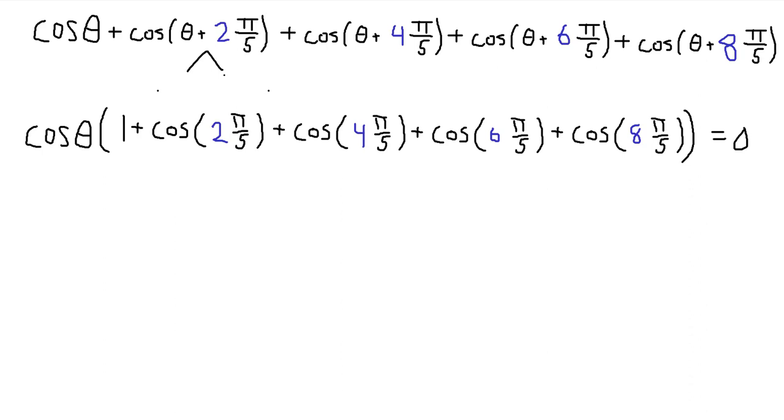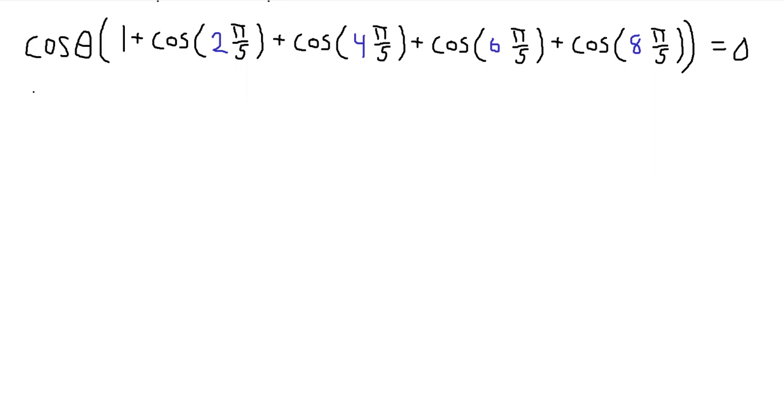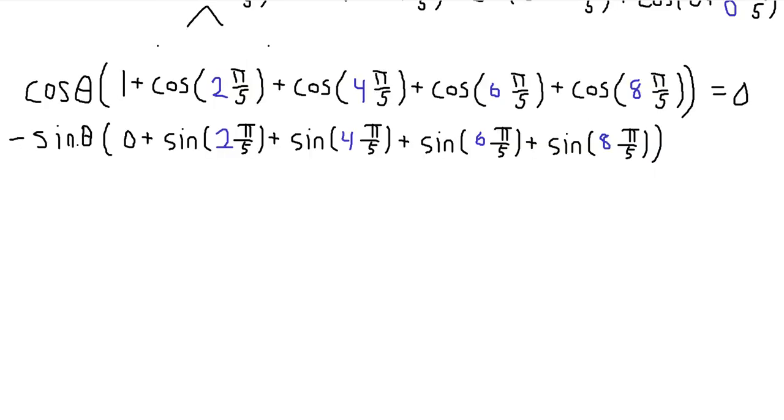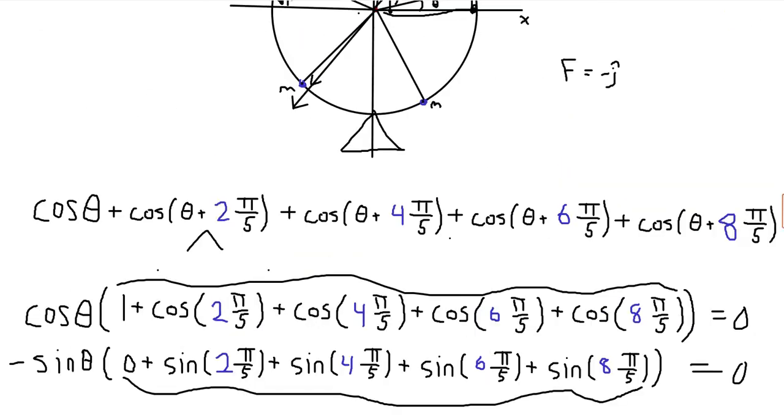And then the second part is that we have these minus sine theta terms. So let's look at that. And so now, so we now have this negative sine of theta factored out. And I've included this zero here, because zero is sine of zero. So now, and one was cosine of zero, right? So now we basically have the same sum, but for the sines of the angles of the roots of unity, of the fifth roots of unity. So this is equal to the sum of the y components. But since the sum of all the fifth roots of unity is just zero, it has a real part of zero, which is right here. And it has an imaginary part of zero, which is right here, the sum of all the y components. So since this is zero and this is zero, the total sum is just equal to zero. Which means that our net torque is equal to zero, and we have static equilibrium.